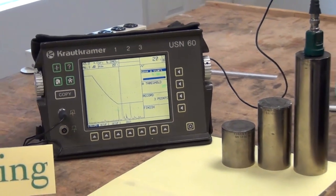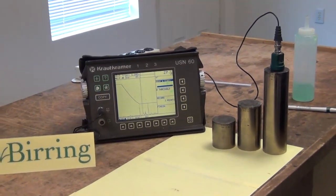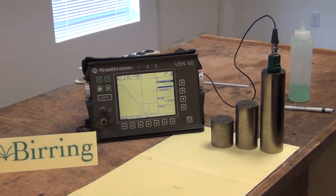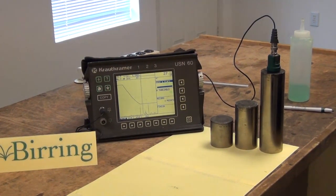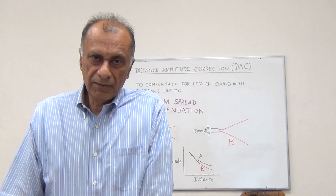That completes the creation of the DAC curve, which is the distance amplitude curve. As I said earlier, the DAC curve is used for compensating for the loss of sound with distance. This was a short demonstration of the DAC curve.